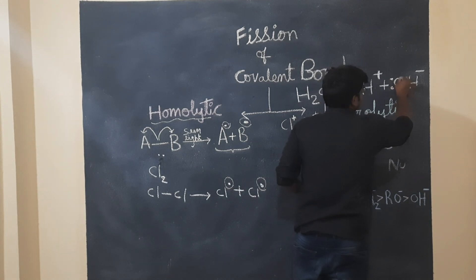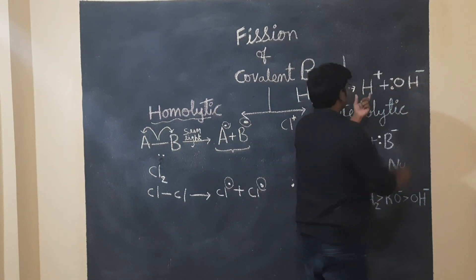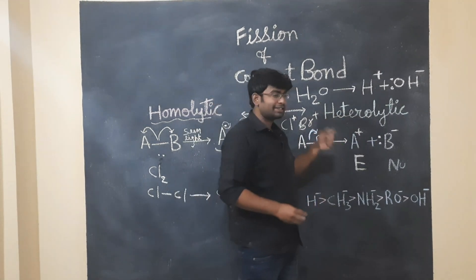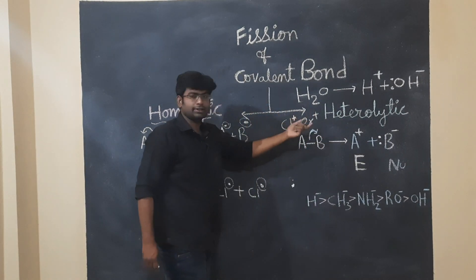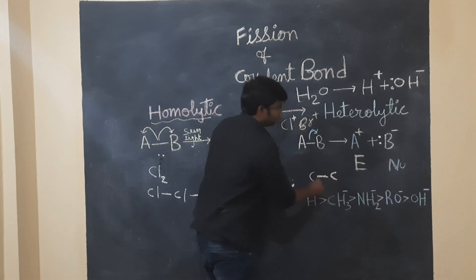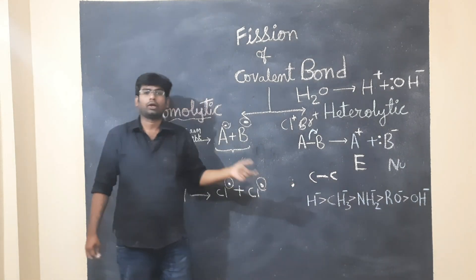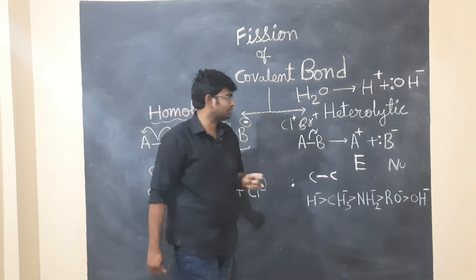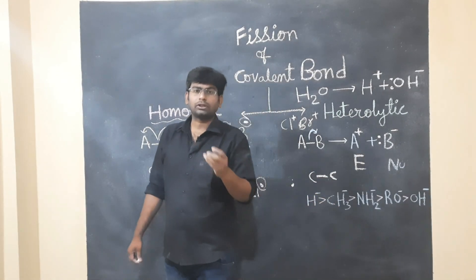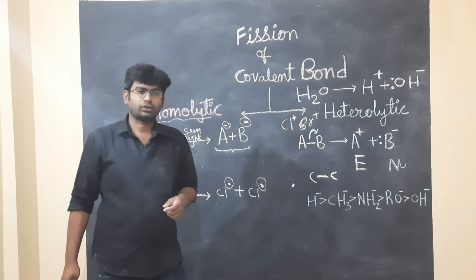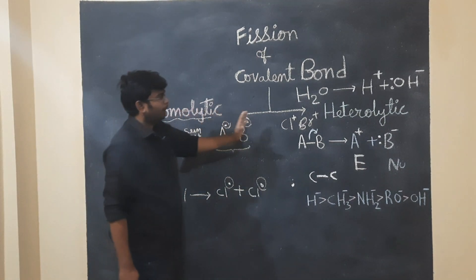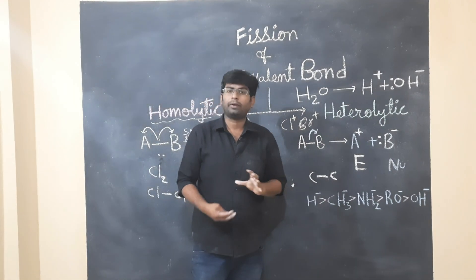When we have heterolytic fission, the electron-rich part is the nucleophile and the electron-deficient part is the electrophile. That's why we have a base acting as a nucleophile. This is non-polar compounds undergoing homolytic fission, and polar compounds undergo heterolytic fission. I hope we can understand. Thanks.